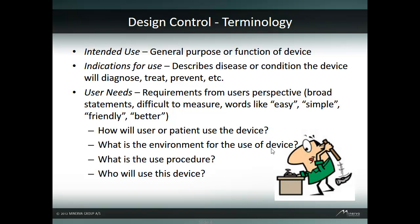User needs are requirements from the user's perspective, typically broad statements that are difficult to quantify or measure. They use words like easy, simple, friendly, or better. For example, the device must be easy and simple to operate. To get user needs, ask questions like: How will the user or patient use the device? What is the use procedure? What is the device use environment?